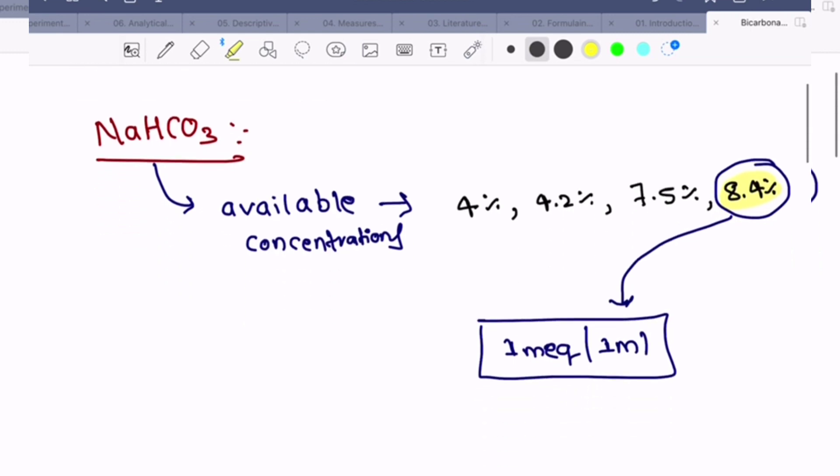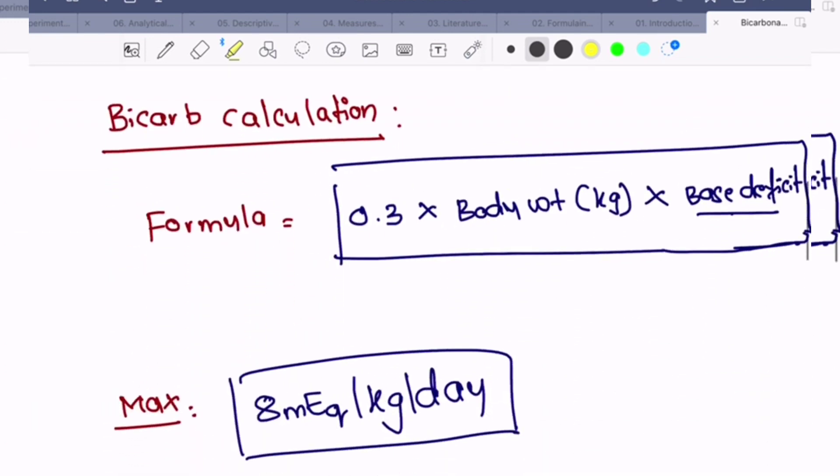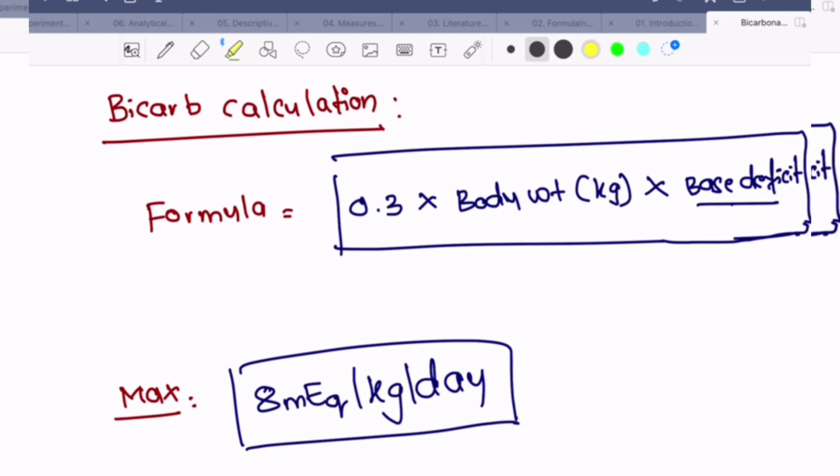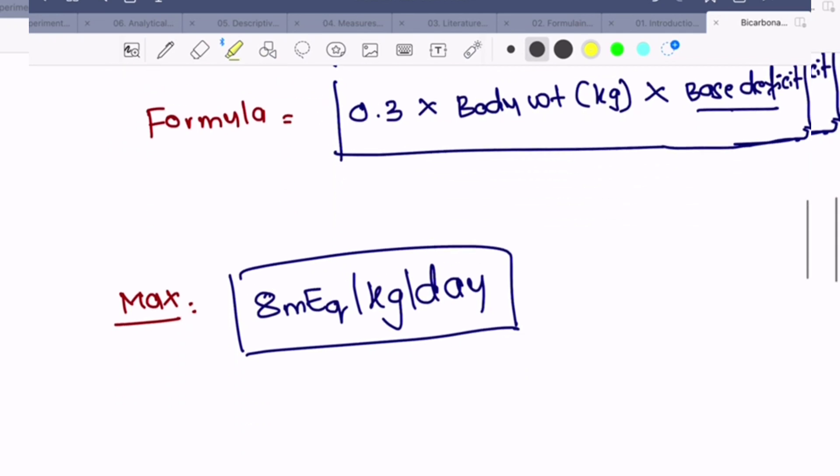8.4% is equal to 1 milliequivalent per ml. The bicarb correction formula is 0.3 times body weight in kg times base deficit. Maximum you can give is 8 milliequivalents per kg per day.